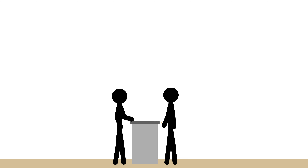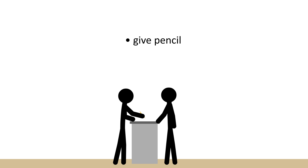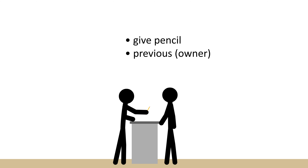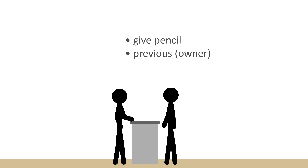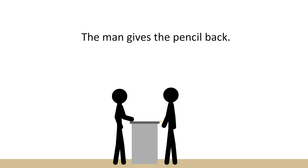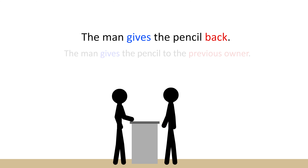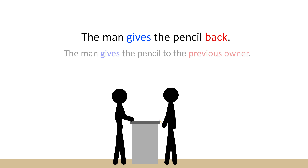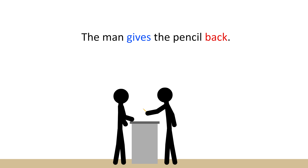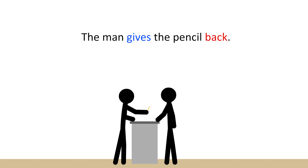How do you think we could describe this? Here, the man gives the pencil to the previous owner. So we can say, the man gives the pencil back. Gives means give, and back means previous, or in this case, previous owner. So the sentence just means, the man gives the pencil to the previous owner.